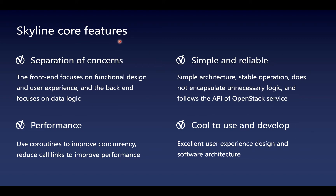Let's talk about Skyline's core features. Firstly, the frontend and backend have their own responsibilities. The frontend focuses on functional design and user experience, and the backend focuses on data logic. Secondly, it is simple and reliable. With a simple architecture and stable operation, it doesn't encapsulate unnecessary logic and it follows the API of OpenStack services. Thirdly, it provides better performance. It uses coroutines to improve concurrency and reduces API callings to improve performance.